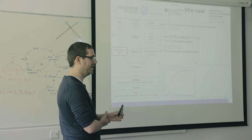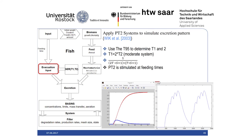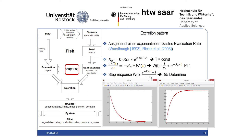Vic introduced a concept where you can model how fish excrete feces and ammonia by simulating it with a PT2 system. At the feeding point the excretion rate rises and then shrinks afterwards. If you do the integral over it it looks like a curve, and I set the T95 at the same value. This way I simulate how they excrete ammonia and feces into the water. With several feedings it looks a bit bumpy but it still works fine.